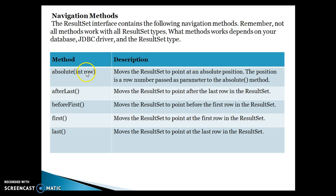So 1 means the first row. If you call resultSet.absolute(2), that means your ResultSet is going to point to the second row in the ResultSet. Make sure your ResultSet is scrollable. If you don't know how to make a ResultSet scrollable, please go and watch my previous video where I have shown practical examples. Basically, absolute moves the ResultSet to the absolute position — the row number passed as a parameter.